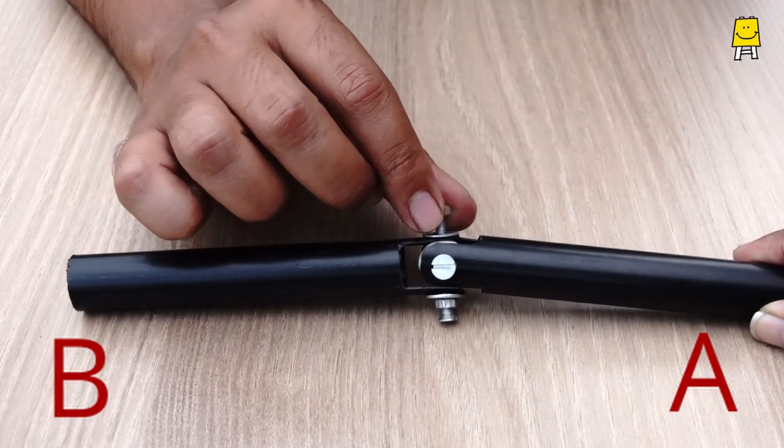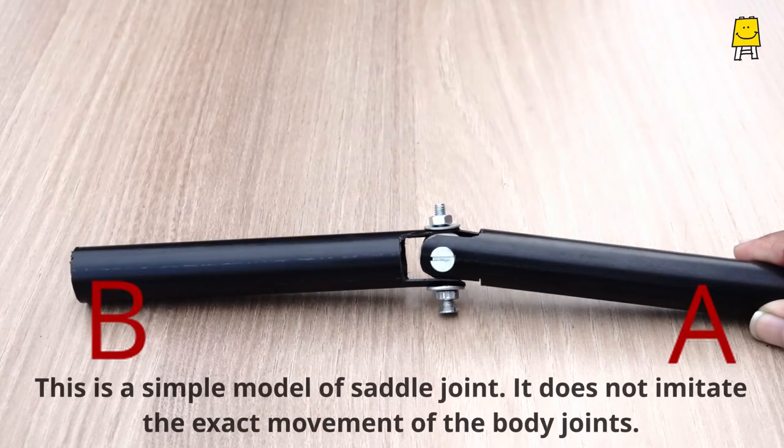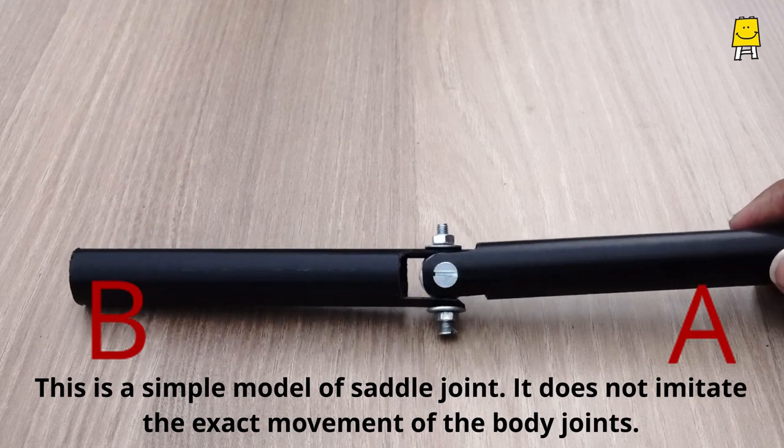Hence, pipe A assembly fits into pipe B. Here you have a simple saddle joint.